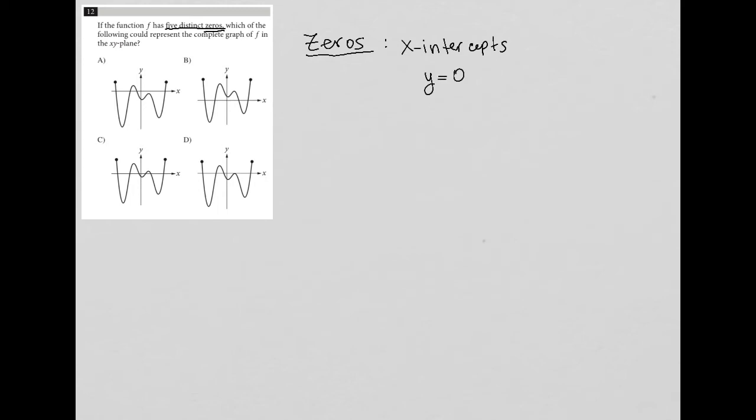So x-intercepts means points on the x-axis. If we were dealing with a polynomial here, you'd be able to find those values by plugging in zero for y. But because we're dealing with a graph, we can just identify them visually. So let's just say it that way.